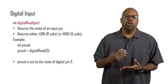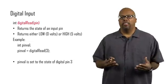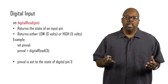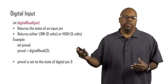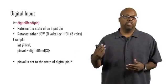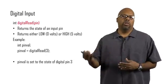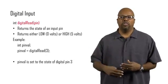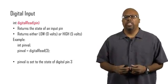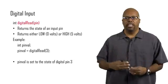Note that it returns an int. So if you look at the example, I create an int pinval. I say pinval equals digitalRead(3). So what that does is it reads the state of pin 3, assumes it's either 0 volts or 5 volts, and returns LOW if it's 0 volts, or HIGH if it's 5 volts. Notice that pinval is an int, so you can interpret that as a 0 and a 1. A 0 meaning low, a 1 meaning high.